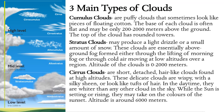The next type is stratus clouds — very low-level clouds that may produce light drizzle or a small amount of snow in cold areas. These clouds are essentially above-ground fog, and fog is also a type of stratus cloud.